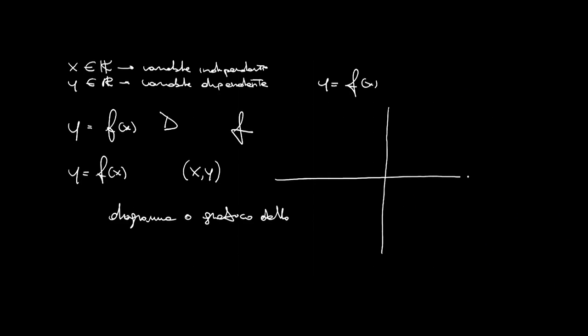L'insieme di tutti i punti che soddisfano la legge della funzione viene detto diagramma o grafico della funzione. In particolare, il diagramma che utilizzeremo è un diagramma cartesiano, dove sull'asse orizzontale — asse delle ascisse — indichiamo i valori della x, e sull'asse verticale — asse delle ordinate — indicheremo i valori della y. La funzione associa a ogni elemento x1, x2 appartenente a X il corrispondente valore f(x1) o f(x2), che leggeremo sull'asse delle ordinate.